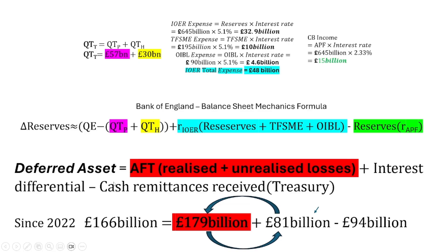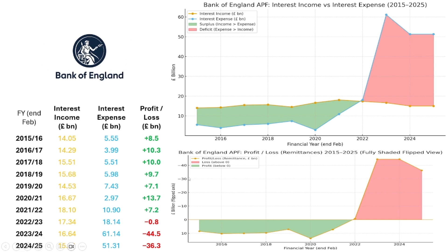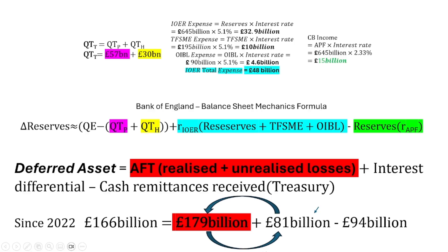Today we'll discuss the deferred asset but mainly focus on the asset side of the balance sheet to realize unrealized losses. Last time I looked at the interest differential and discussed how the losses over the last three years since 2022 total up to about 81 billion, and that the central bank needs to print up or get this money from the treasury or taxpayers. We're going to discuss this number here, which is much bigger and much more scary.